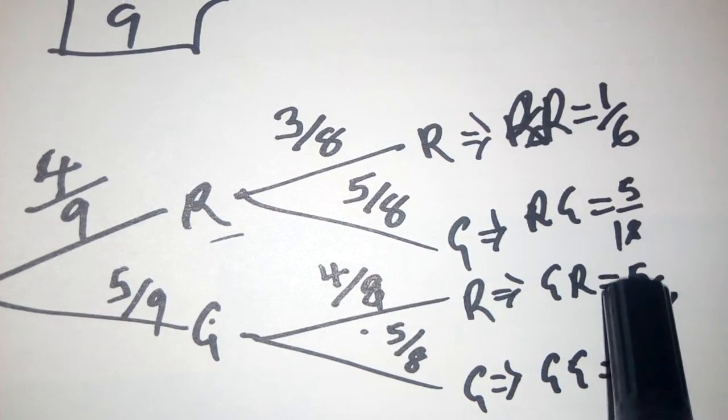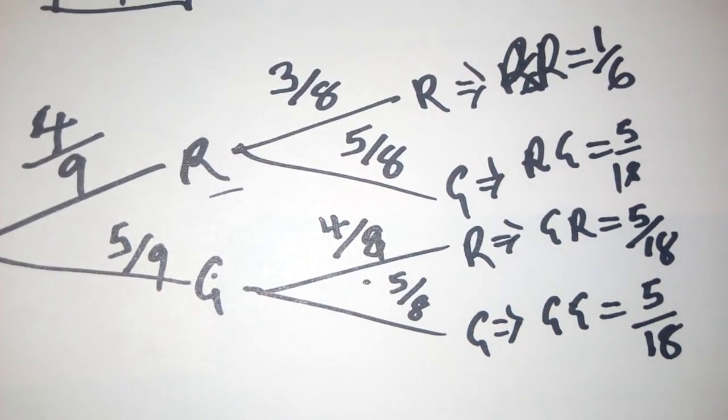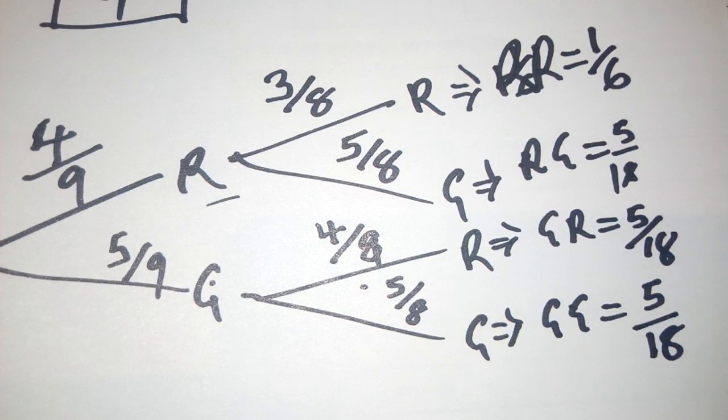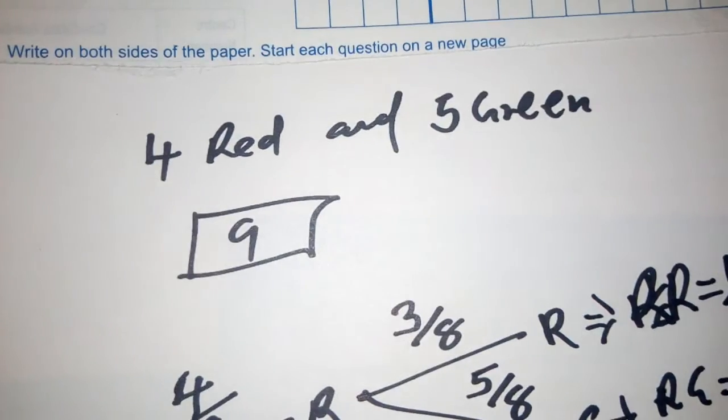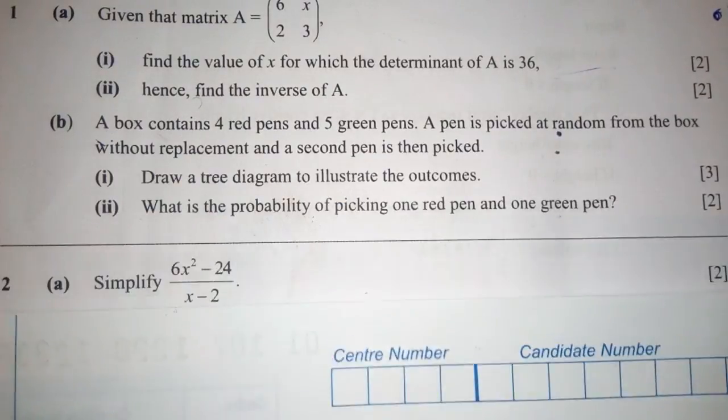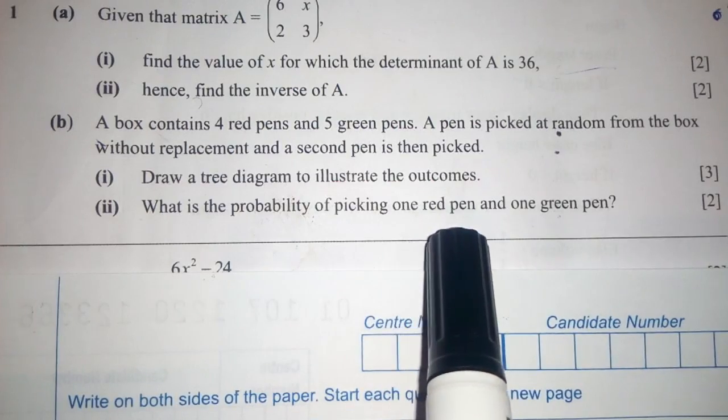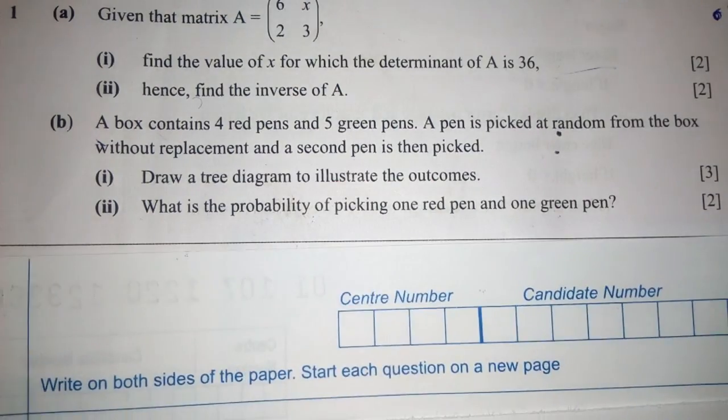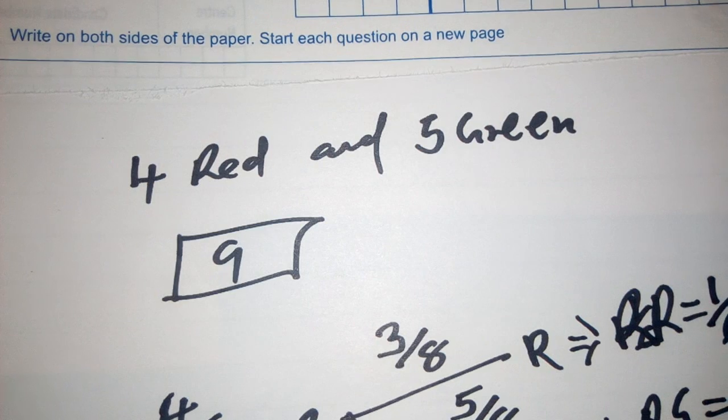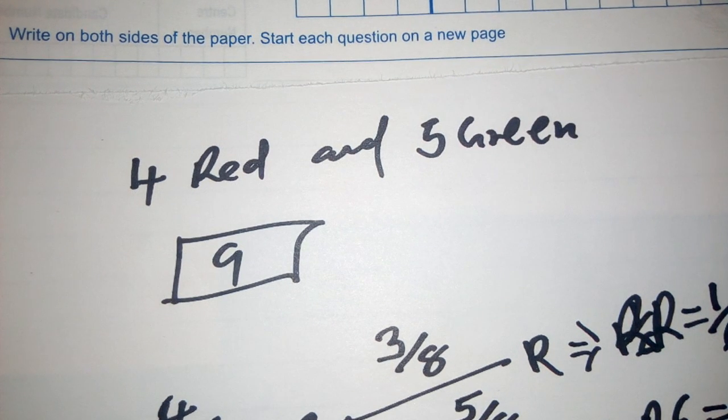So that's how it is. We can check question 2. It says, what is the probability of picking 1 red pen and 1 green pen. So 1 red pen and 1 green pen.